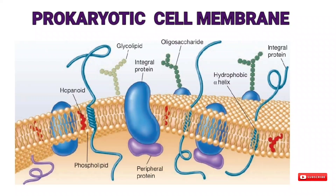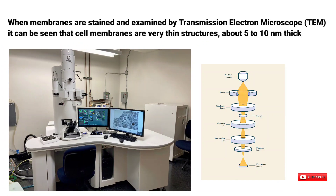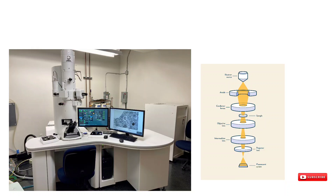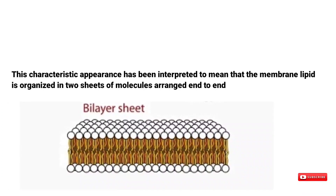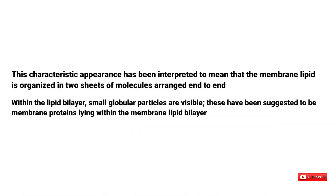Transmission electron microscopy (TEM) studies were particularly important. When membranes are stained and examined by TEM, cell membranes appear as very thin structures about 5 to 10 nanometers thick, appearing as two dark lines on either side of a non-stained interior. This characteristic appearance indicates that membrane lipids are organized in two sheets of molecules arranged end to end. Within the lipid bilayer, small globular particles visible in TEM have been suggested to be membrane proteins lying within the membrane lipid bilayer.